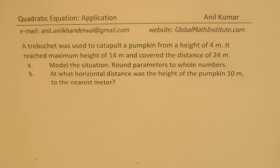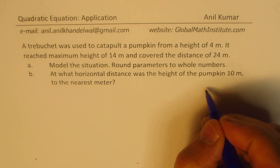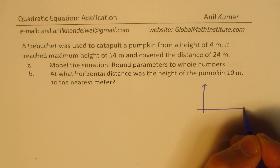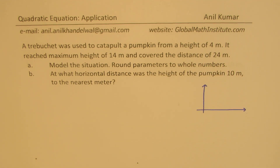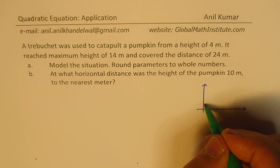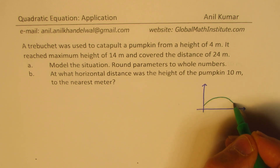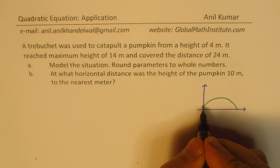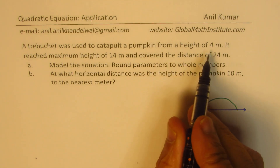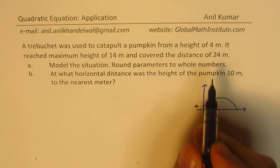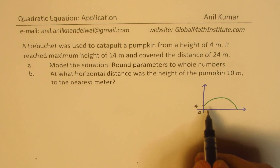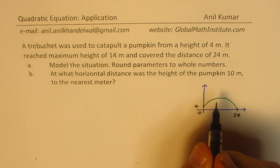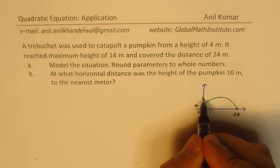Let us try to sketch and then solve the particular question. The height is shown on the vertical y-axis and distance on the horizontal x-axis. That is the path followed by the pumpkin. We will assume this path to be a parabolic path. We are given that the height from which it is thrown is 4 meters, and the distance which we are targeting is 24. The maximum height is given to us as 14.